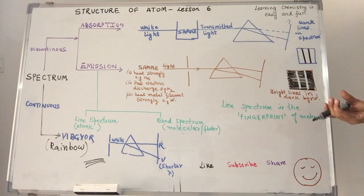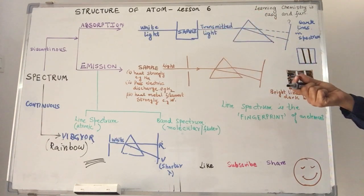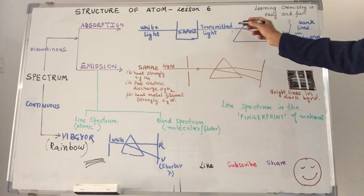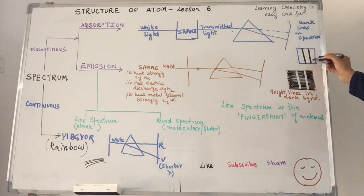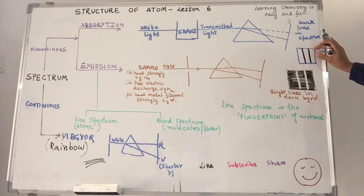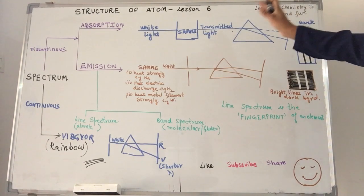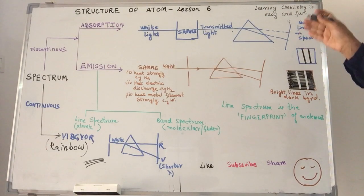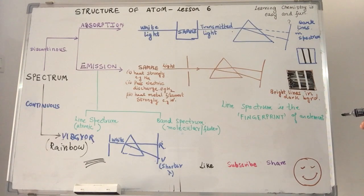When the white light is passed through the sample, depending upon what sample we have, some portions of the white light get absorbed by the sample and the transmitted light will be missing those wavelengths which have been absorbed. So when you see the photographic plate, you will have everything bright. The background of this photographic plate will be bright and there will be dark lines corresponding to the wavelength of light which has been absorbed by the sample. So here we have got dark lines in a bright background. This is what we call the absorption spectrum.